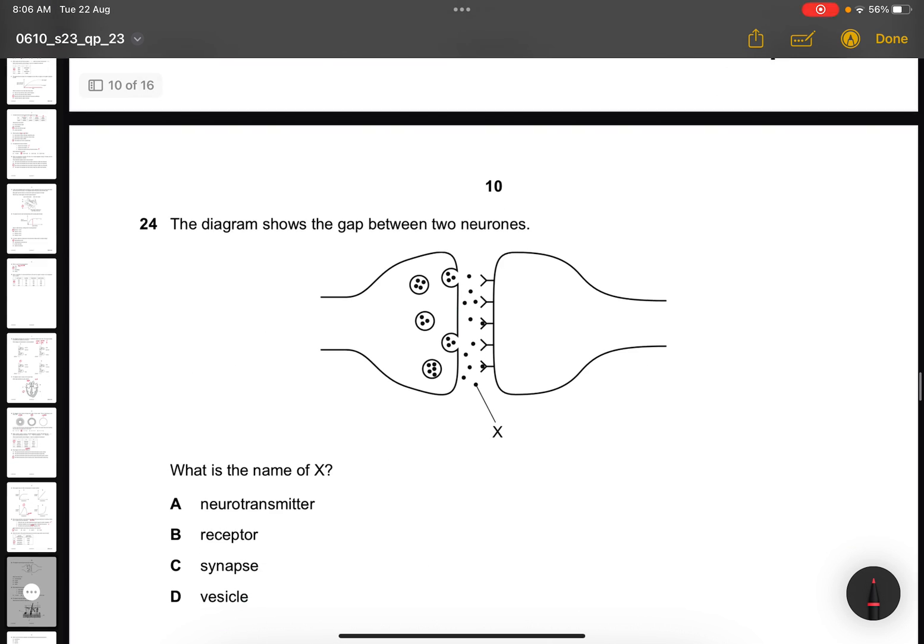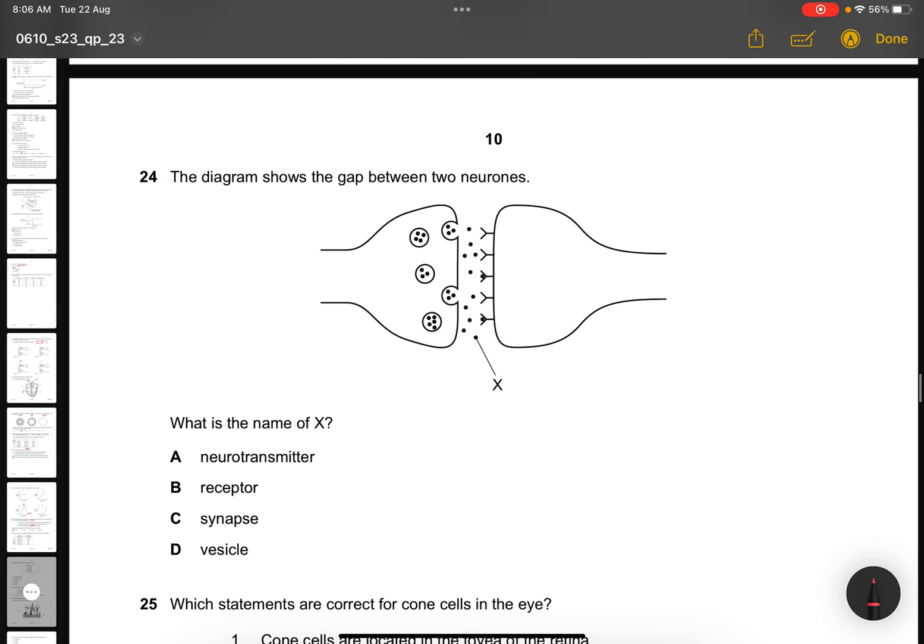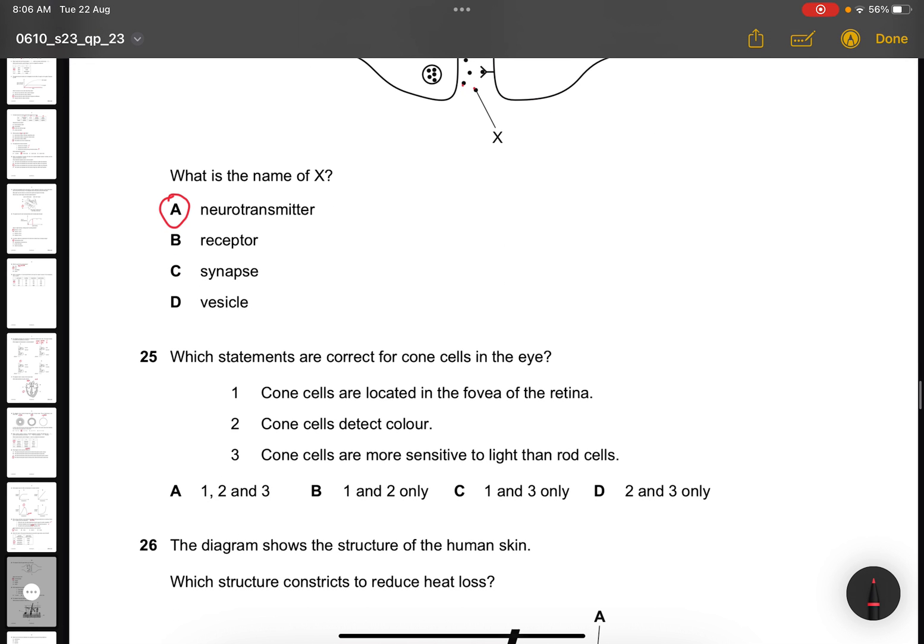Question 24. The diagram shows the gap between two neurons. What is the name of X? X is those tiny little dots here that they were pointing. So they are neurotransmitter. Question 25. Which statements are correct for cone cells in the eye? They detect color. Cone cells are located at the fovea of the retina, that's correct. Cone cells detect color? Nope. Cone cells are more sensitive to light than rod cells? Nope. It should be rod cells being more sensitive than cone cells. So the answer is B.